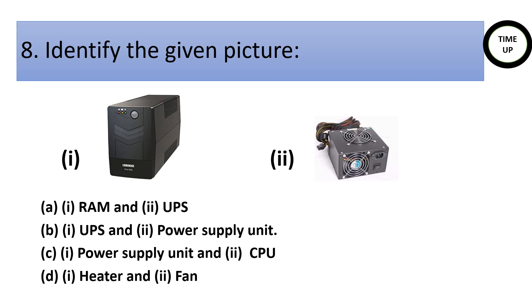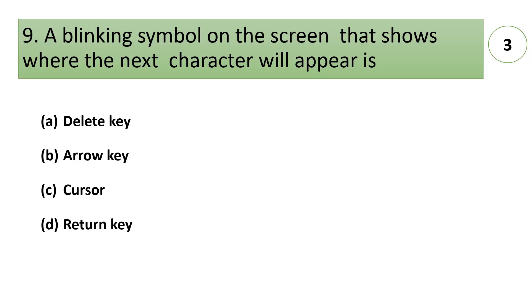Answer B first is UPS that is uninterrupted power supply and B second is power supply unit. A blinking symbol on the screen that shows where the next character will appear is called A. delete key, B. arrow key, C. cursor, D. return key. Answer is C. cursor.